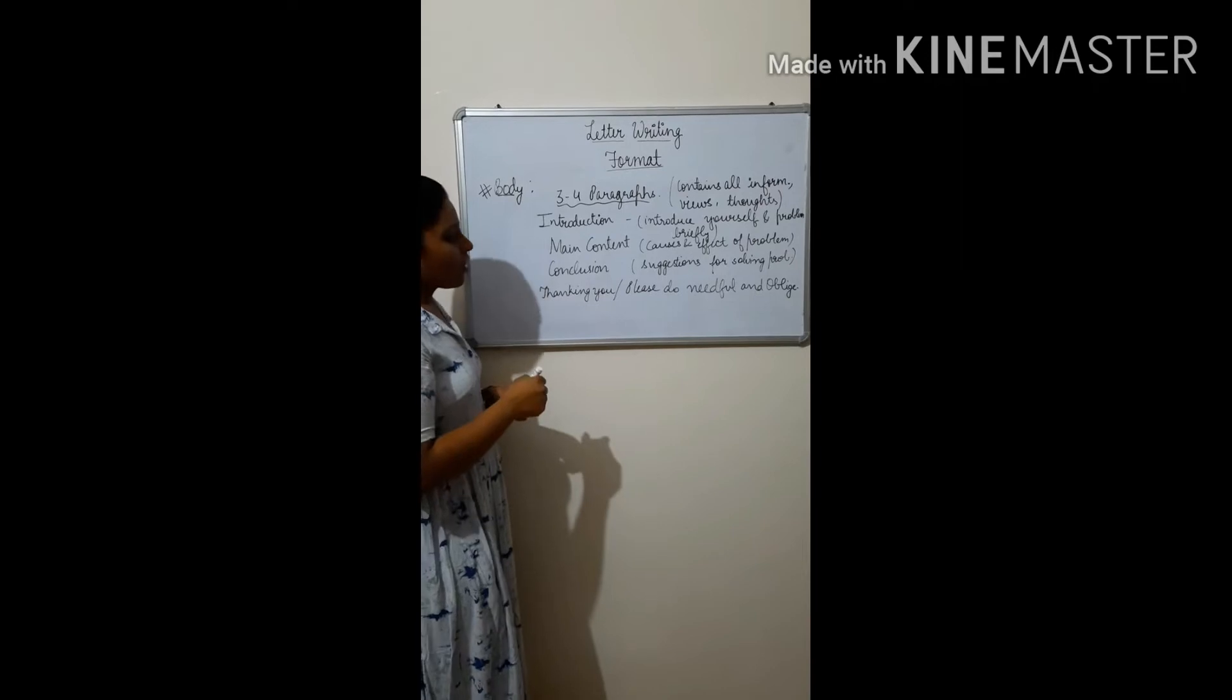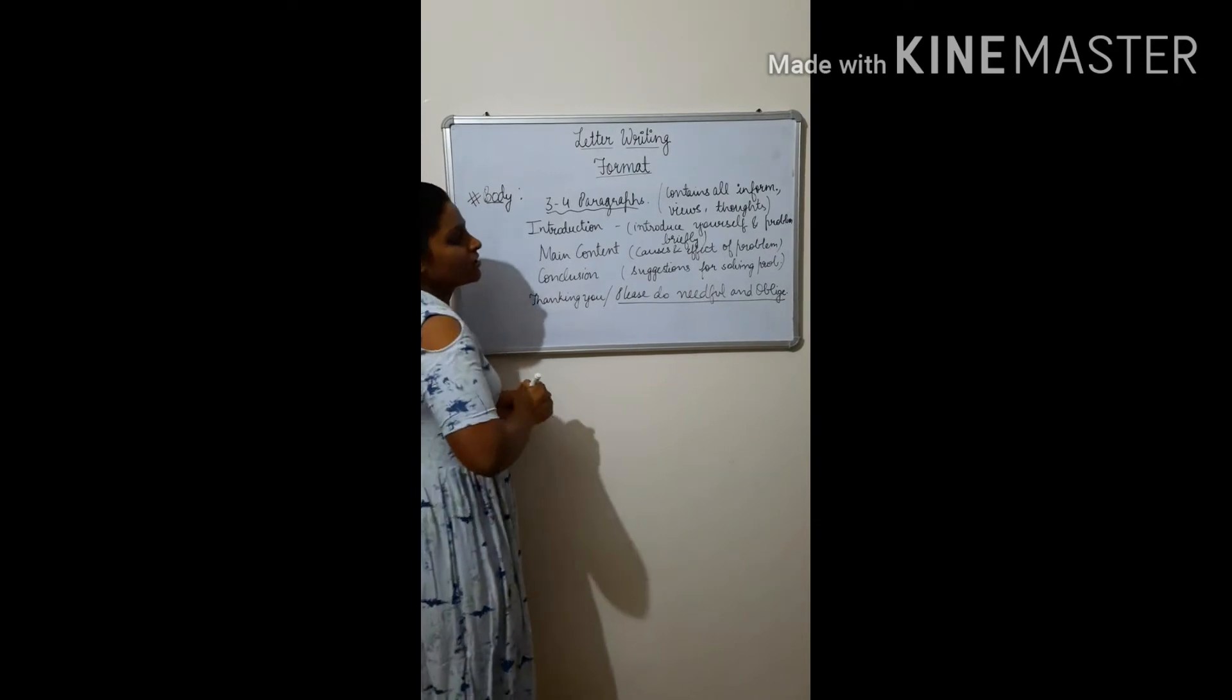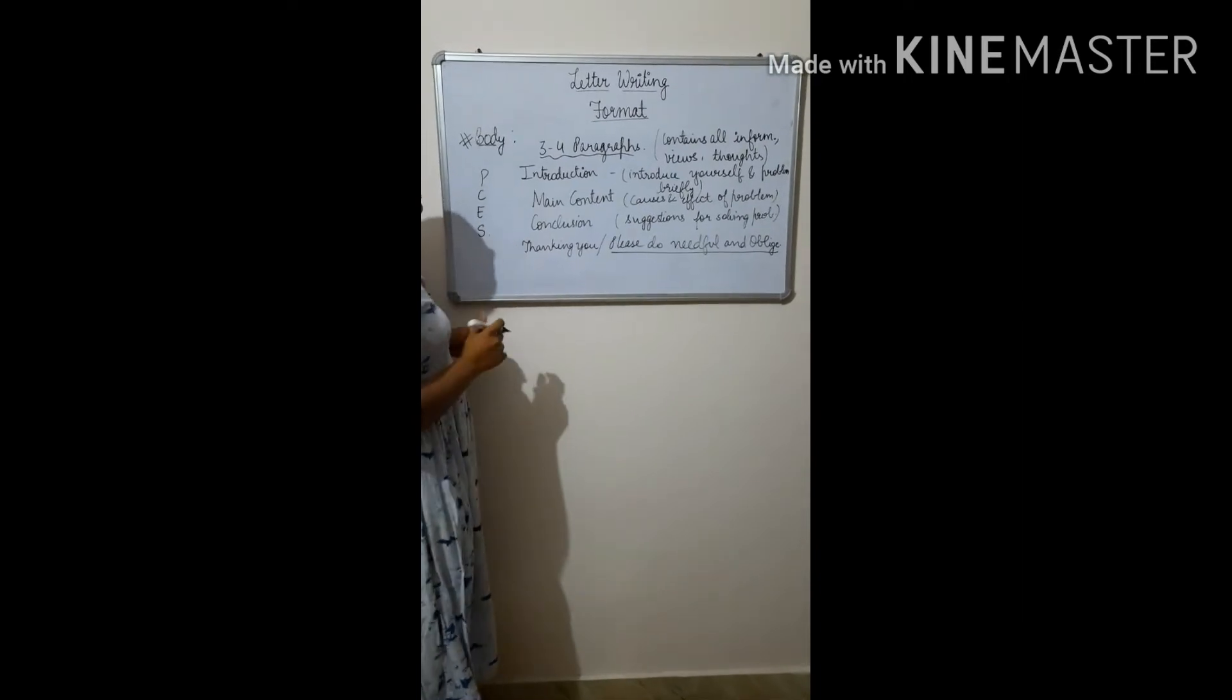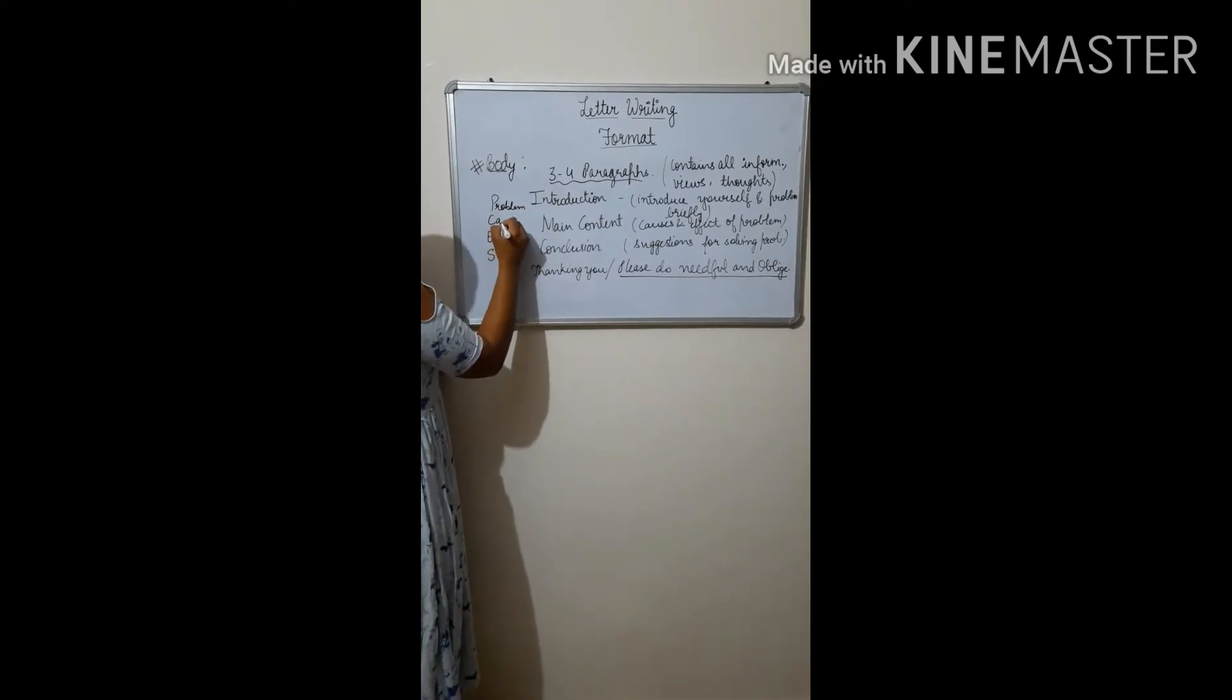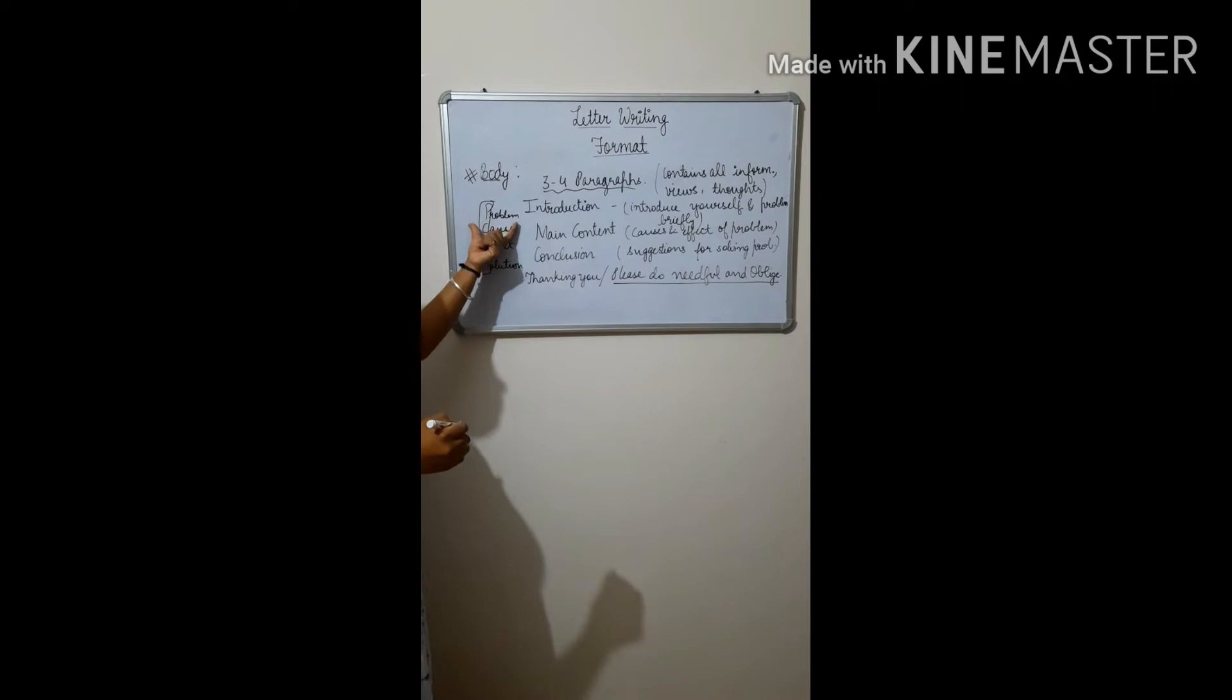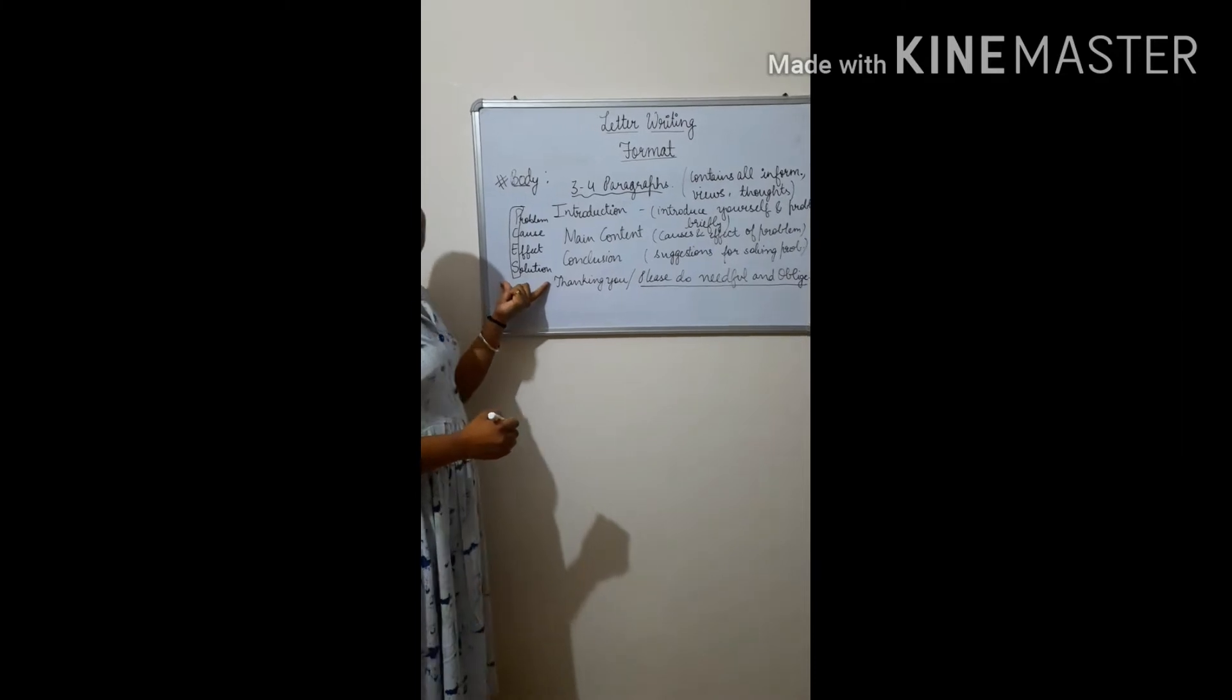After that, conclusion. Conclusion includes suggestions for solving problem. If you know any suggestion for solving that problem, you can also mention your suggestions for solving your problem. Then after that, you mention thanking you or thank you, or also this beautiful clause which says please do needful and oblige. This is very beautiful clause. If you mention this one, you will get good marks, even grace marks. So there is one shortcut to frame a body of letter: P, C, E, S. P represents problem, C represents cause, E represents effect, and S represents solution. So if you learn these four words, P, C, E, S, problem, first of all you have to mention the problem by introducing yourself. After that, you have to mention cause, and after that you have to mention effects of that problem, and at last you have to mention the solutions for that problem.